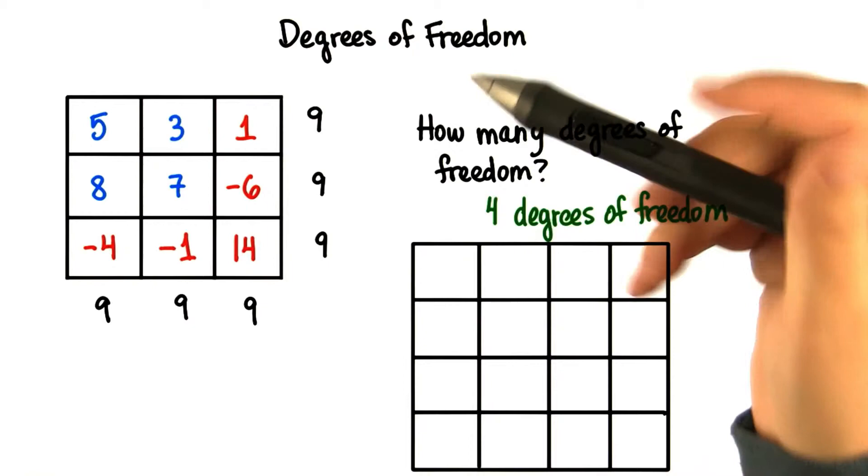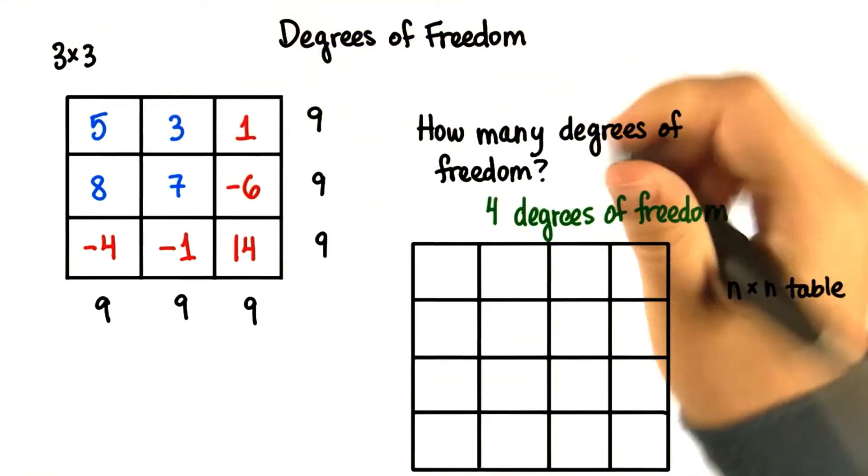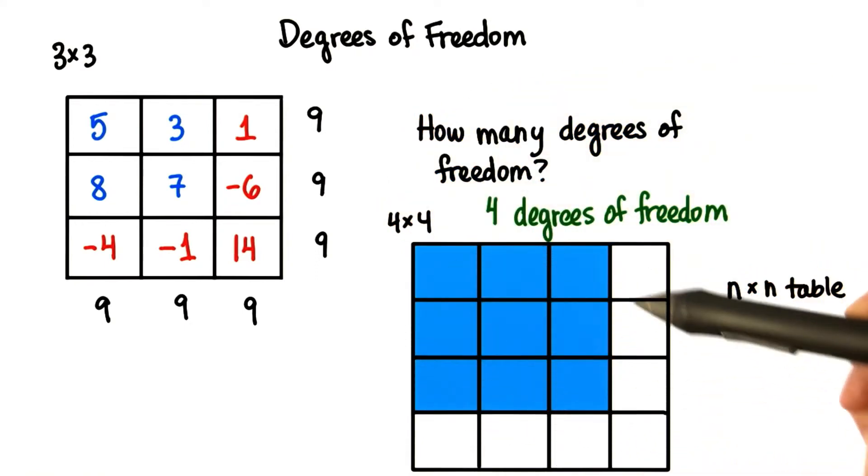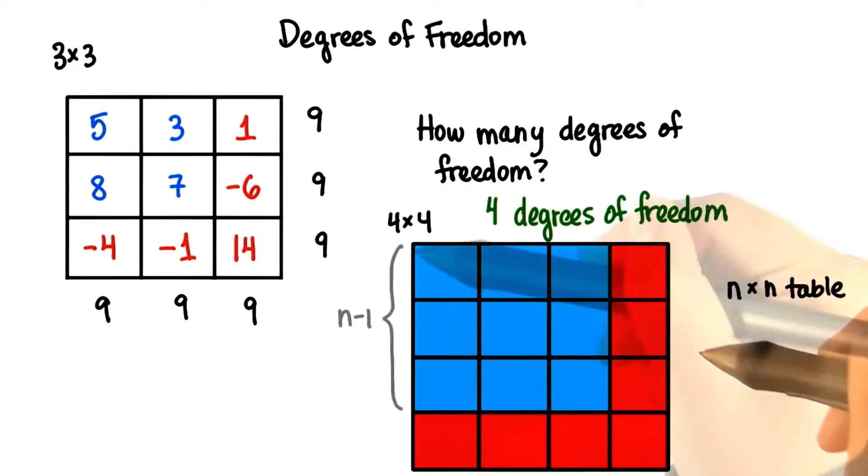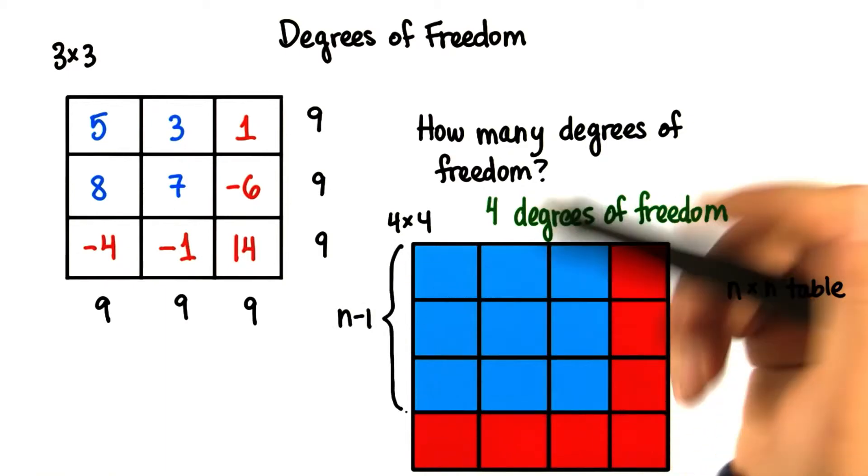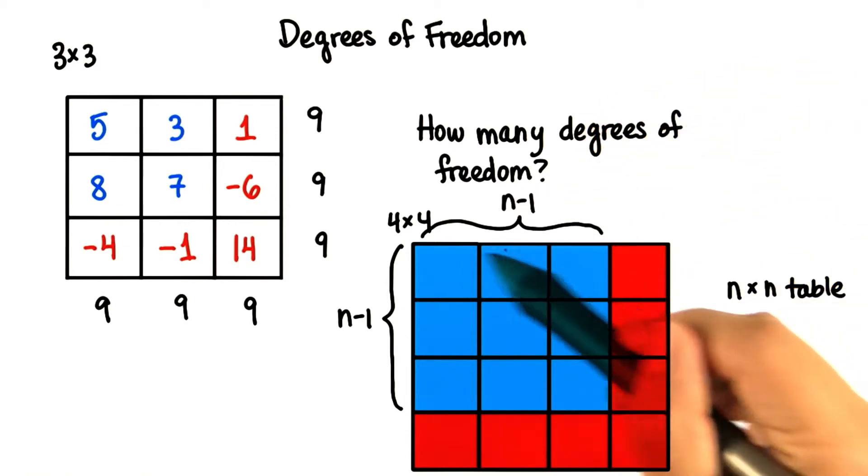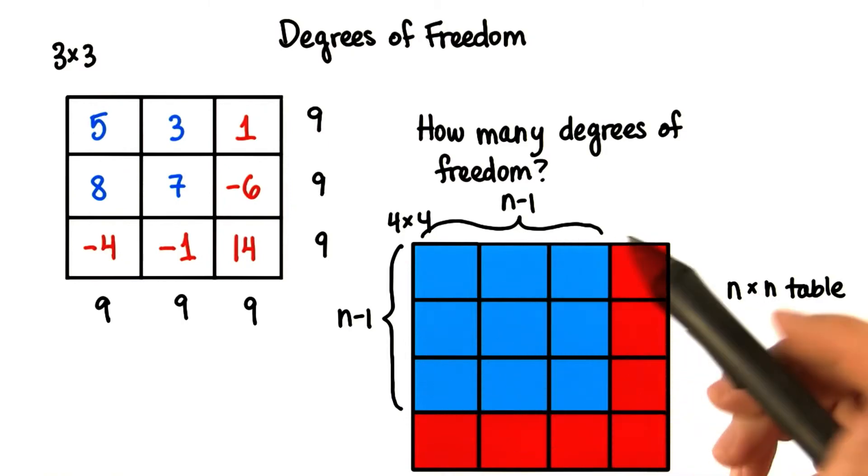But if we have an n by n table—in this case, this is a 3 by 3 table, this is a 4 by 4 table—then we would be able to choose all of these entries, but then these ones would be forced. This number of tiles is n minus 1, and this number of tiles is also n minus 1. So the total number that we can choose is n minus 1 squared.